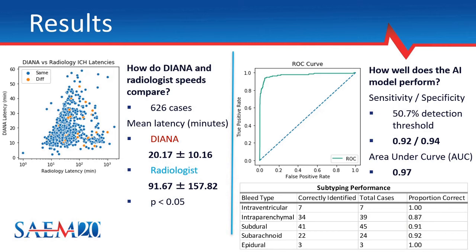Let's take a look at what those numbers looked like, starting with latency in an emergency setting. Across 626 cases, DIANA clocked in at just over 20 minutes, while radiologists were closer to 90 minutes. As for the AI model itself, the detection threshold was set at 50.7% based on the optimal operating point computed for a previous cohort. We found that the model had a sensitivity and specificity of 92% and 94% respectively, with an AUC of 97%. For cases that were positive for brain bleed according to radiology report, the AI model's ability to predict all subtypes was reasonable, with the lowest success still at 87% for intraparenchymal bleeds. The results suggest that DIANA offers a means of AI delivery that could fit into present clinical workflows.